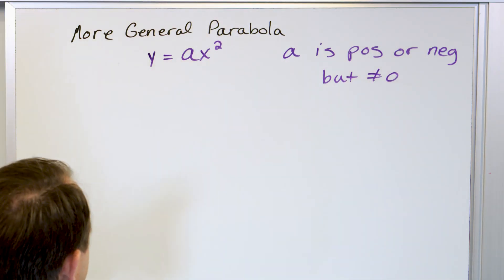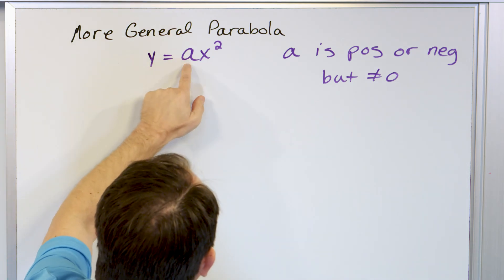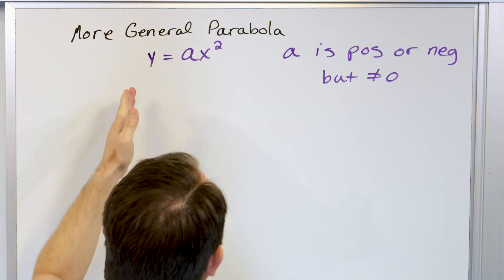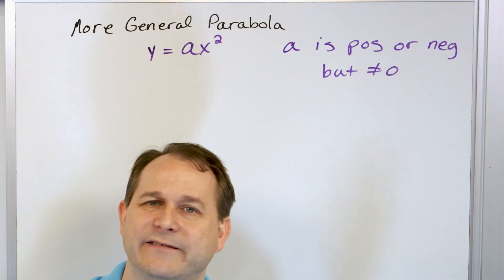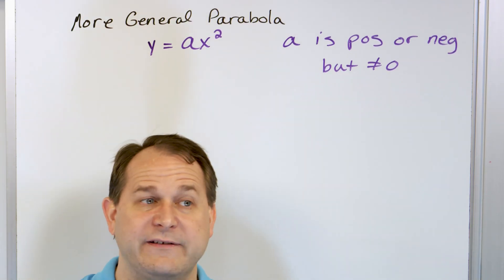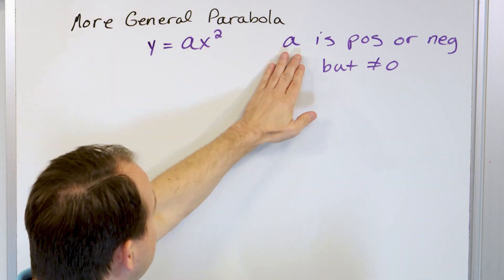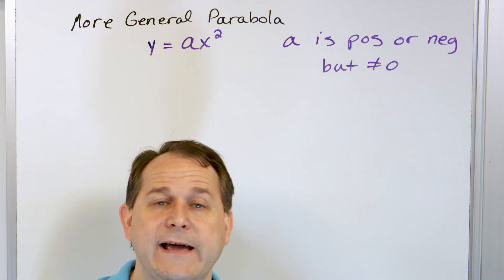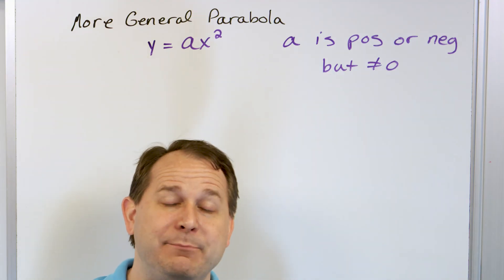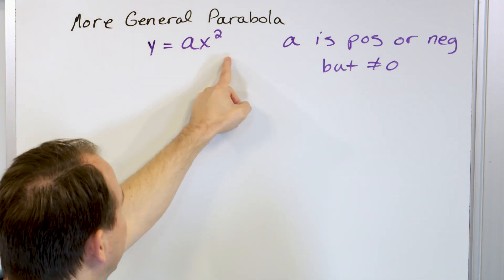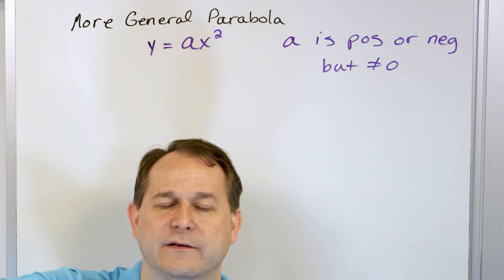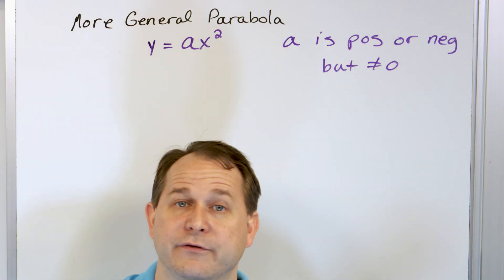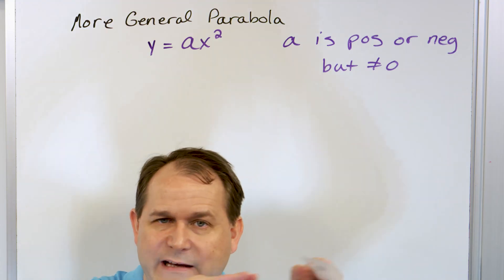We say that a is positive or negative, but it cannot equal zero. For example, a could be 2, 4, 1.5, or three-quarters — it doesn't matter if it's a decimal or a fraction. A could also be negative 4, negative 2, negative 19, or negative one-half. But it can't be zero because if a is zero, y equals zero, which is just a horizontal line along the x-axis — not a parabola at all.